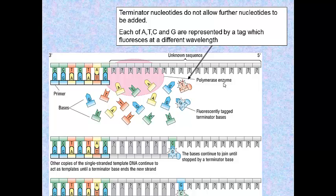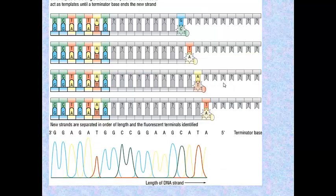What's the application of that? If a terminator nucleotide has been integrated into a strand, the strand will fluoresce at the wavelength of that tag. These terminator nucleotides fluoresce. They fluoresce at a particular wavelength. So, C will fluoresce at a different wavelength to A, different to T and different to G.